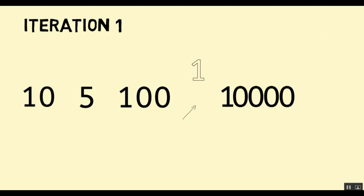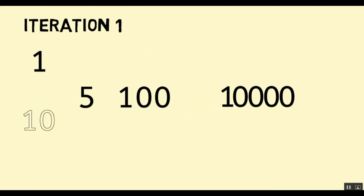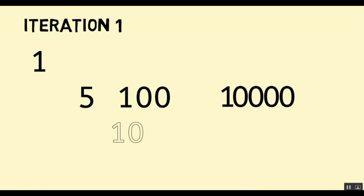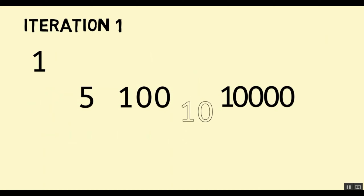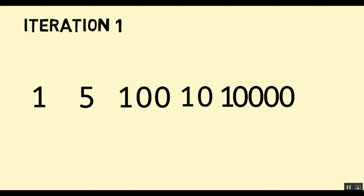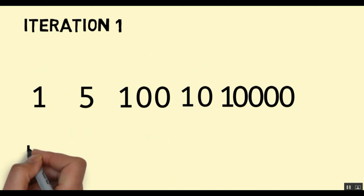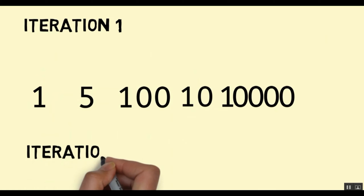So we pick up 1 and swap 10 and 1: 10 goes into 1's position and 1 goes into 10's position at the head of the list. Now when we move to iteration 2...